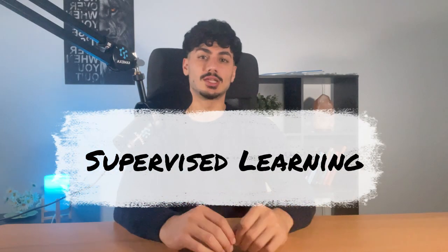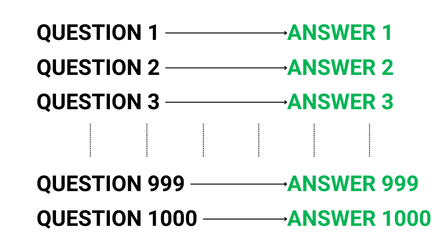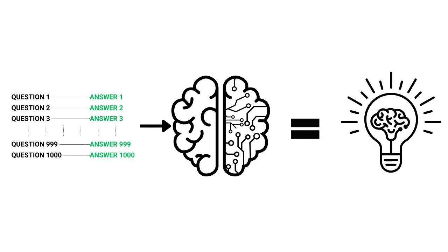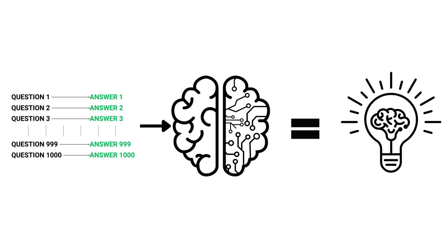But this learning can actually happen in different ways. One way is using a technique called supervised learning. Imagine a student with a workbook where each problem comes with the correct answer written right next to it — this is how supervised learning works. The model gets a bunch of examples with labels, like pictures of cats labeled as 'cat' or dogs labeled as 'dog,' and by seeing the correct answers over and over again, the AI learns to make accurate predictions when given a new unseen problem.